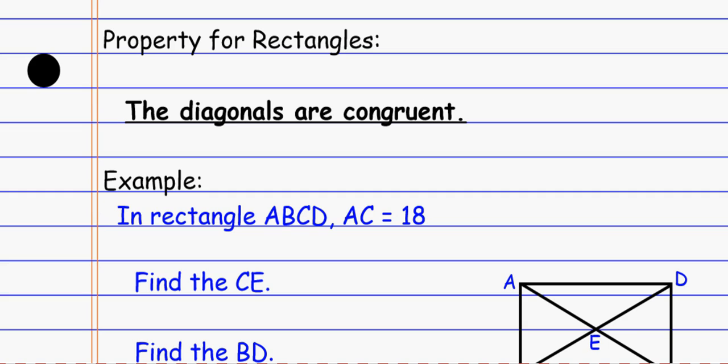Properties for rectangles. A rectangle is a parallelogram, so it still has all the properties for parallelograms: opposite sides congruent, opposite angles congruent, and the diagonals bisect each other. But rectangles also have an additional special property, and that's that the diagonals are congruent.